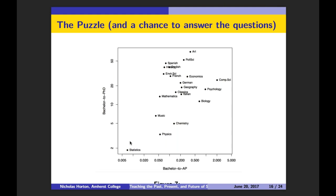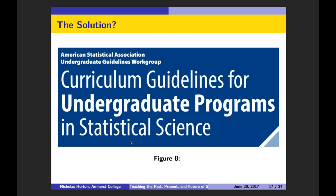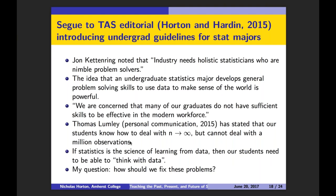We also have a bachelor's to PhD ratio — for every 19 or so bachelor's graduates, there's one PhD in psychology. Art is a bit of an outlier, with more than 50 or 60 art bachelor's for every PhD. But what's really interesting is how far out in the outliers statistics is, both in its bachelor's-to-AP ratio and bachelor's-to-PhD ratio. The solution Ian Johnston talks about is revising undergraduate programs to train holistic statisticians who are nimble problem solvers, with general problem-solving skills to make use of data. Thomas Lumley stated that our students know how to deal as n goes to infinity, but can't deal with a million observations.